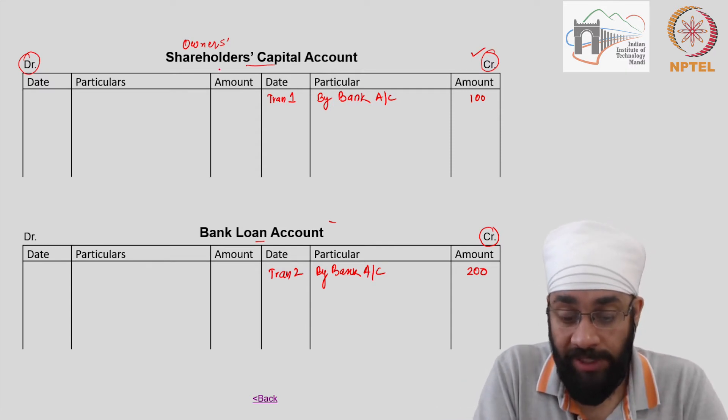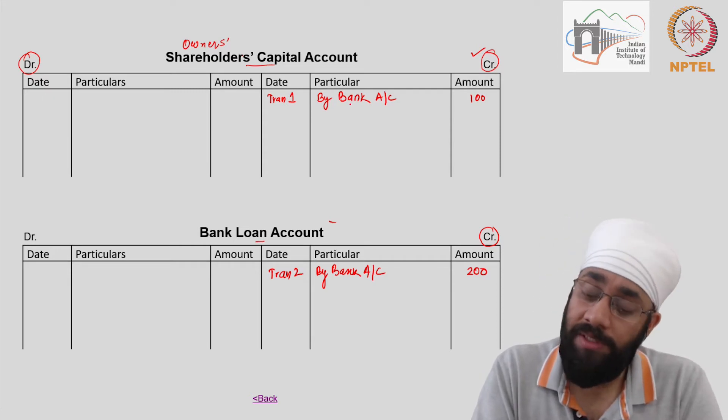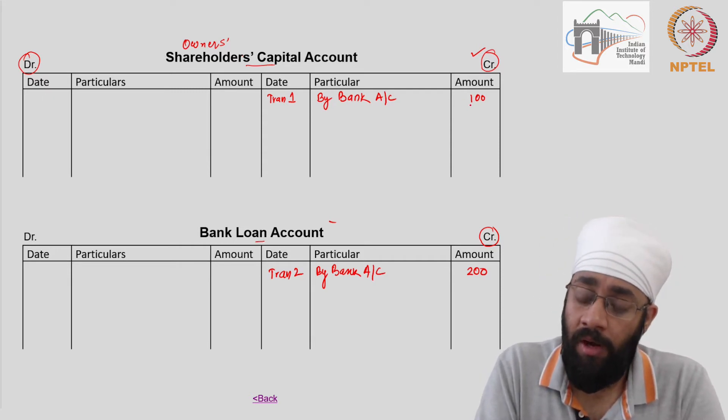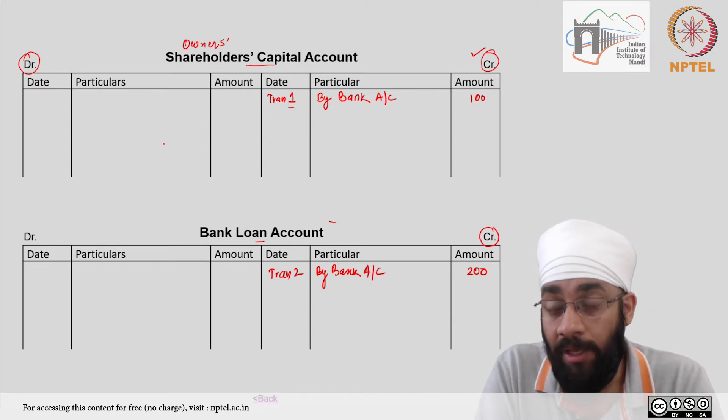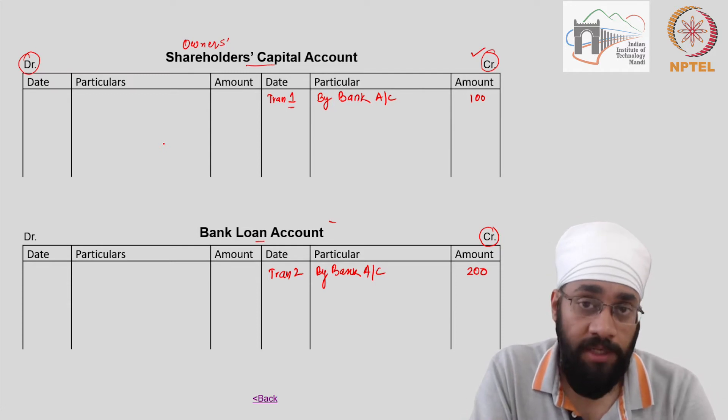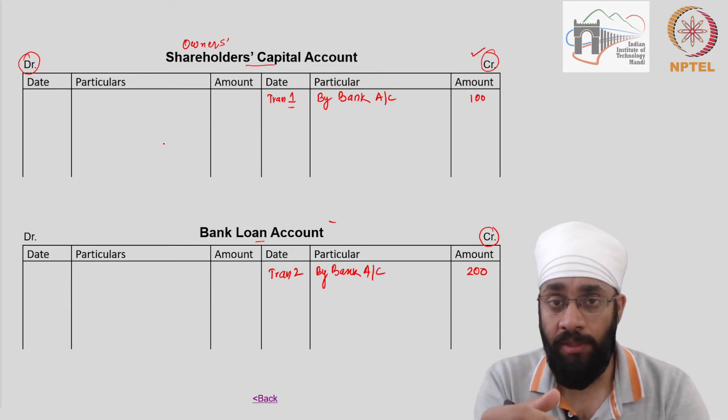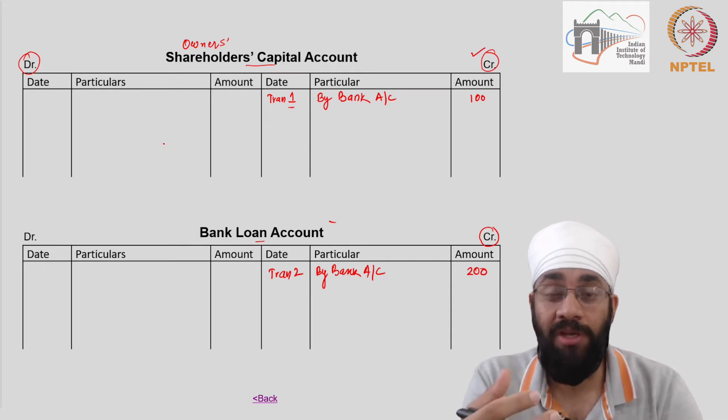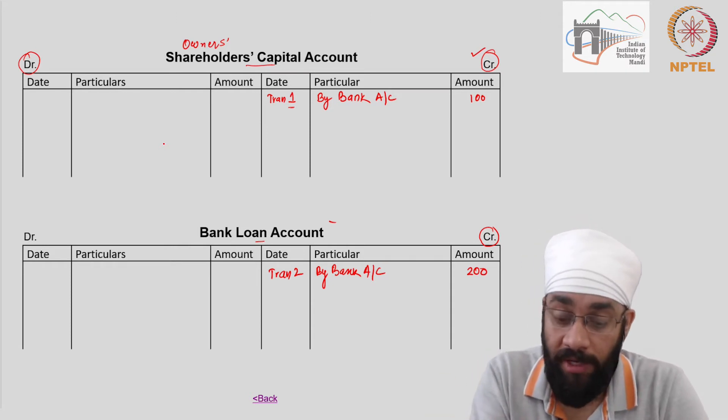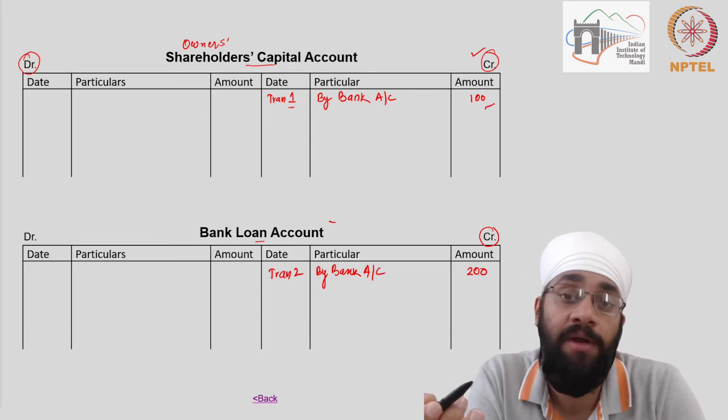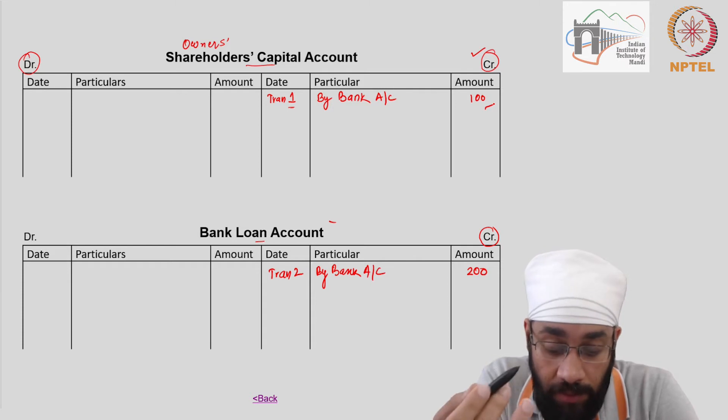As far as shareholders capital account is concerned, we have only one journal entry which basically tells you 100 came in as on this date and after that there is no more money that came in. So at the end of the 14 transactions, if you have to tell somebody that the total amount invested by the shareholders is how much, you go to this account and you say 100 because there is no other entry.